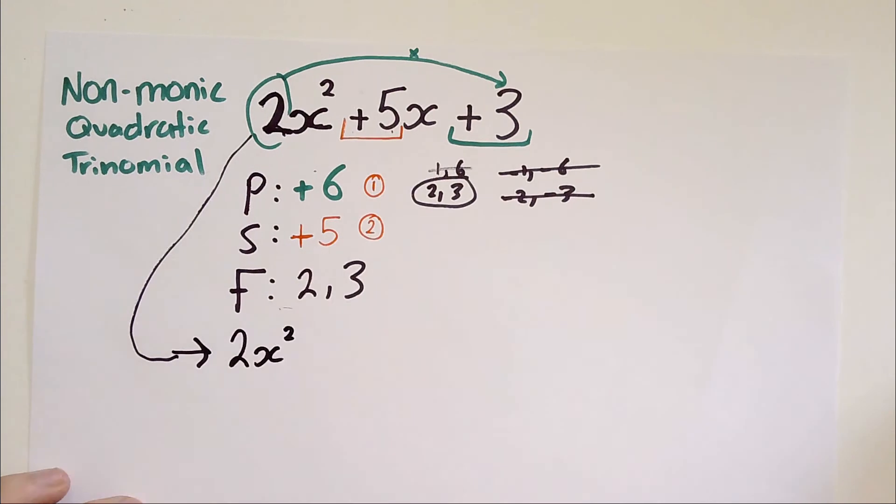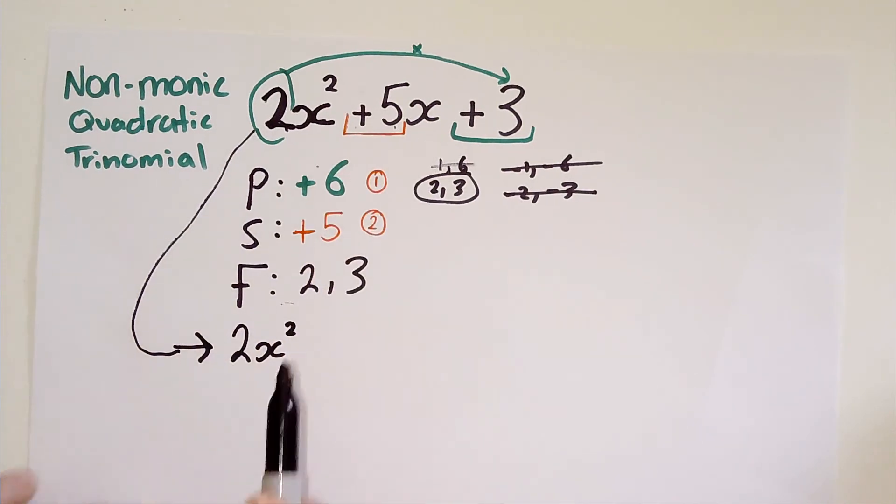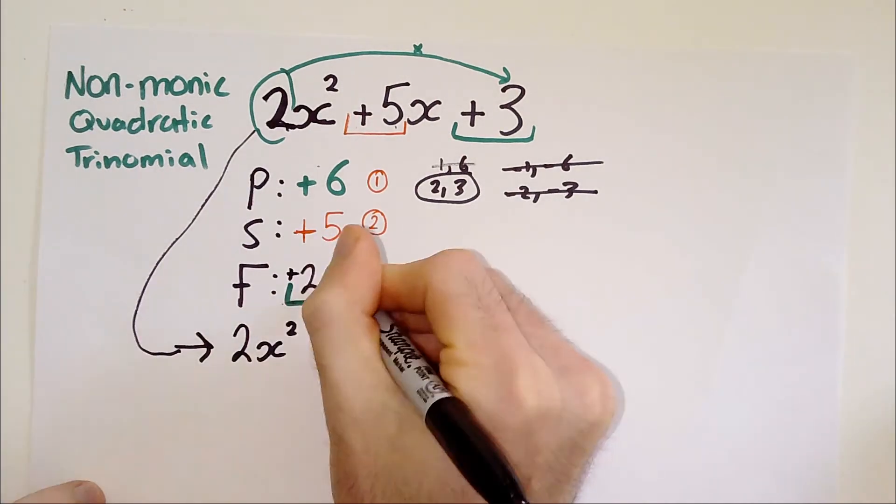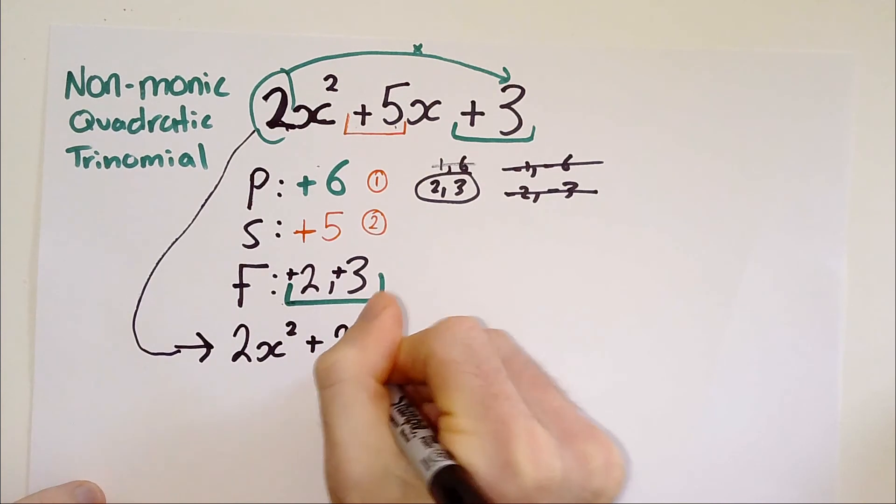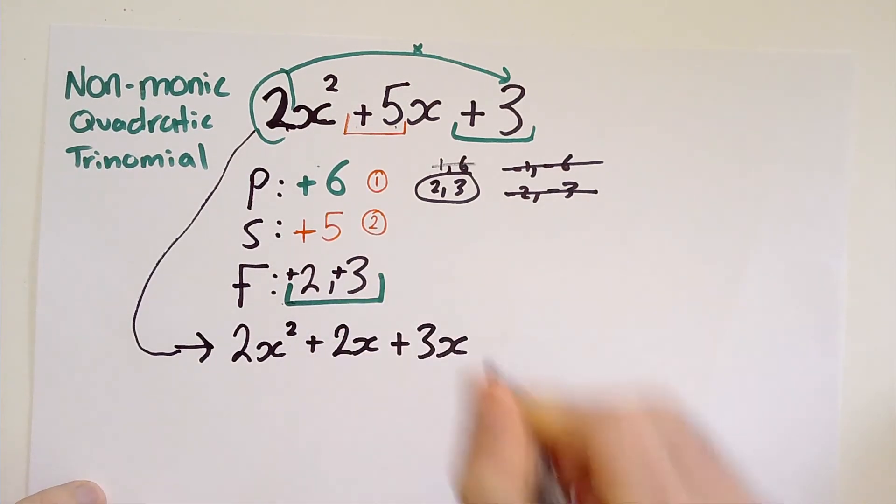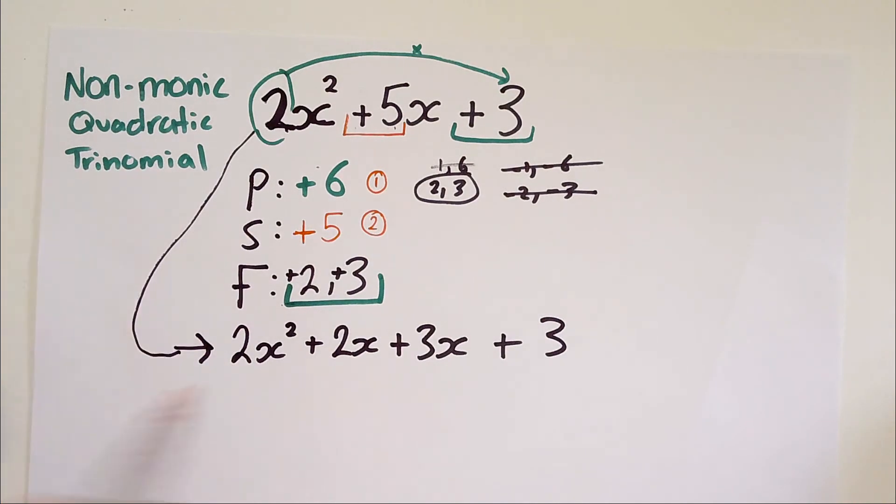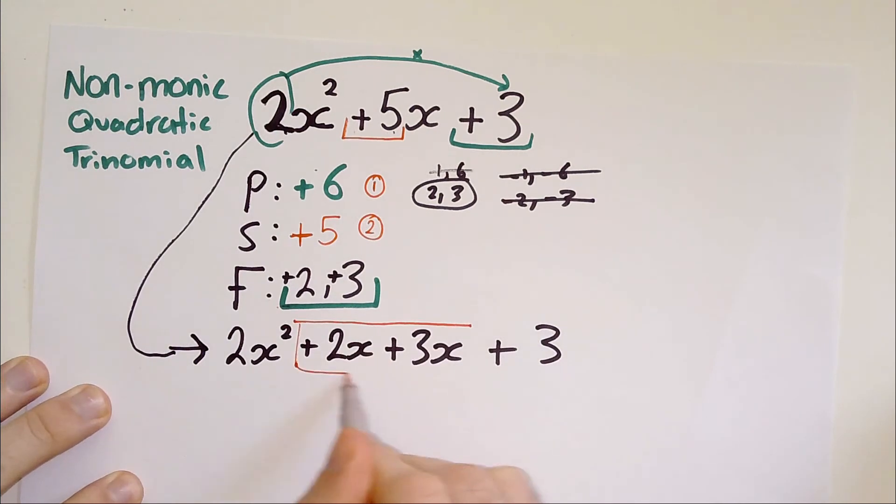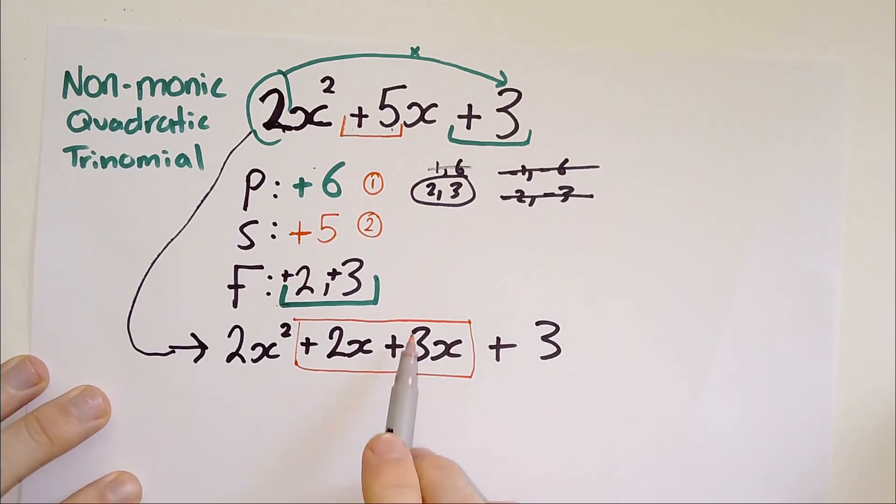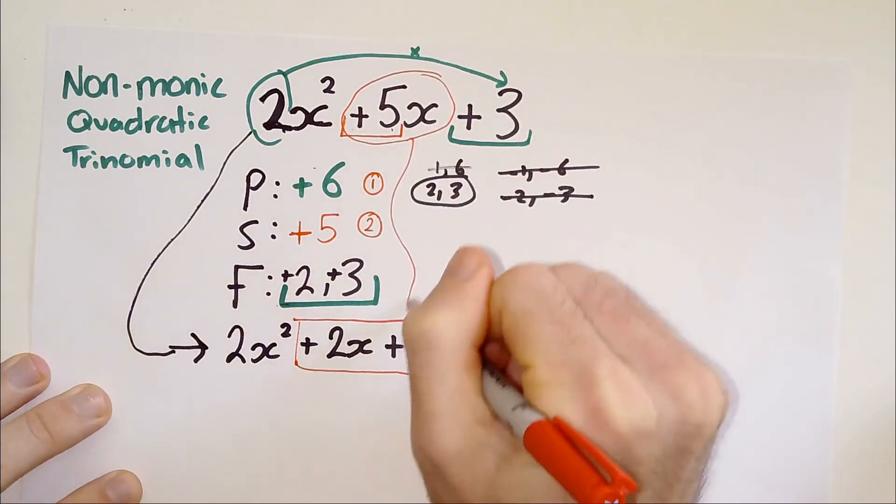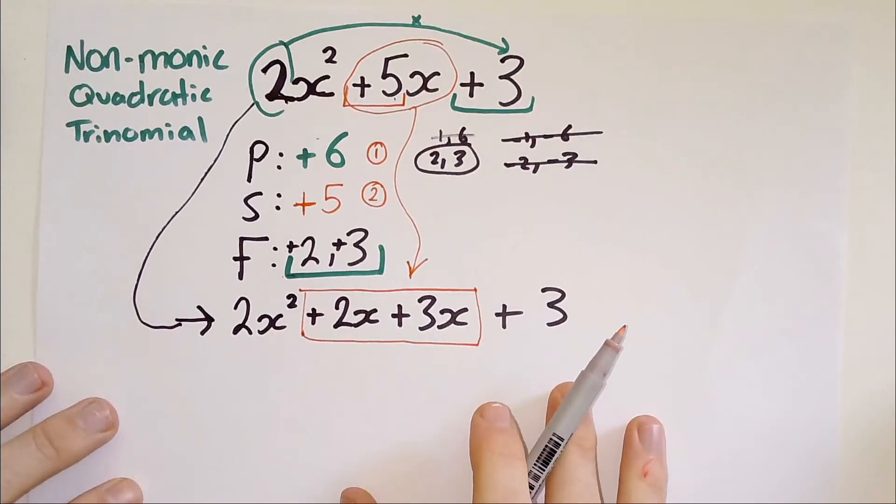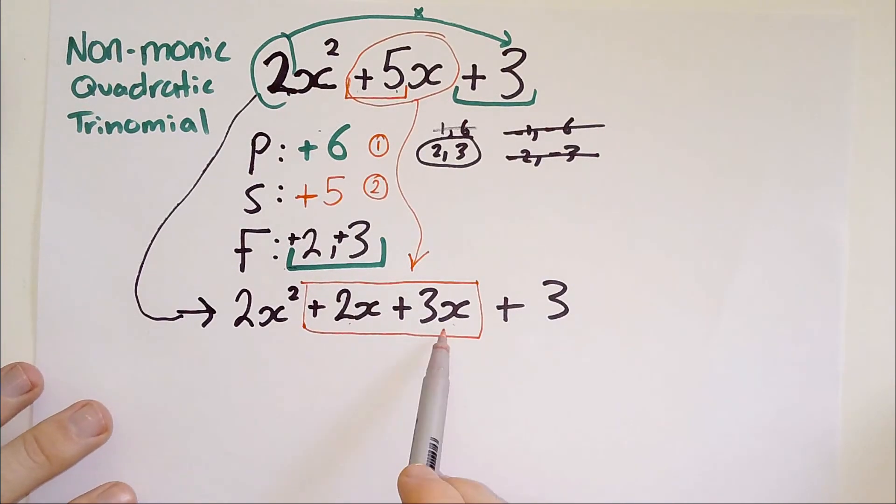It's going to look like this. Two X squared. And then instead of writing plus five X, I write plus five in terms of two and three. When it's positive two and positive three, I write plus two X plus three X plus three. Notice the key part is that the middle term here, using the factors we got from that PSF method, was to split up the plus five X term. It's exactly the same thing.